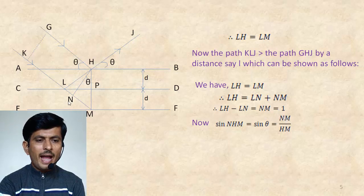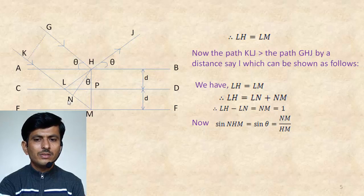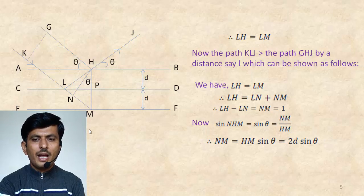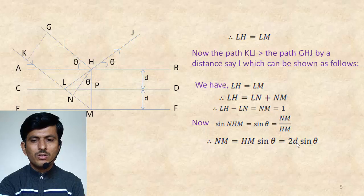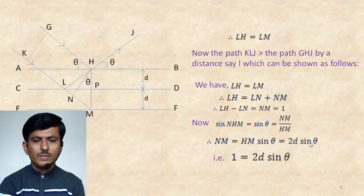Now, sin of angle NHM is equal to sin theta, and this sin theta is equal to NM divided by HM. Rearranging this, we can write NM is equal to HM sin theta. Again, this HM is nothing but HM is equal to HP plus MP. We can write HM is equal to 2D. So NM is equal to 2D sin theta. But NM is equal to L. That is, L is equal to 2D sin theta.